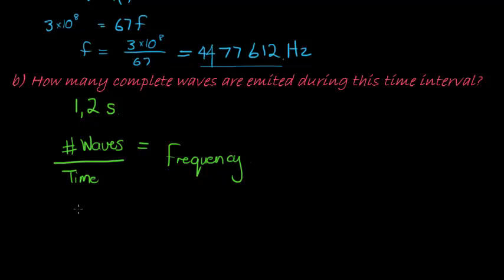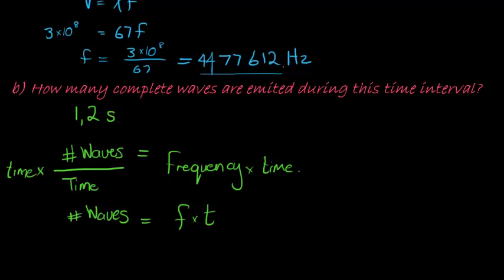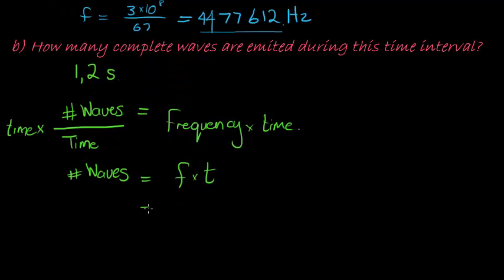So the number of waves is what we want to calculate. The number of waves that has passed by in this time interval, I must multiply both sides with time. And then I get frequency times this time, the 1.2 seconds, gives me the number of waves that will pass by a certain point at that time.